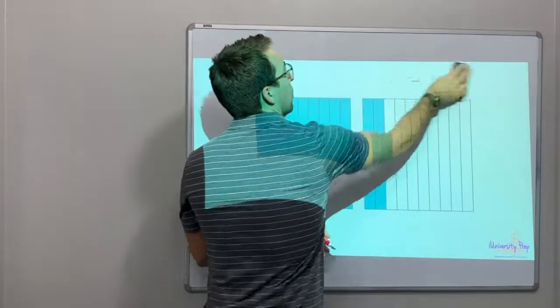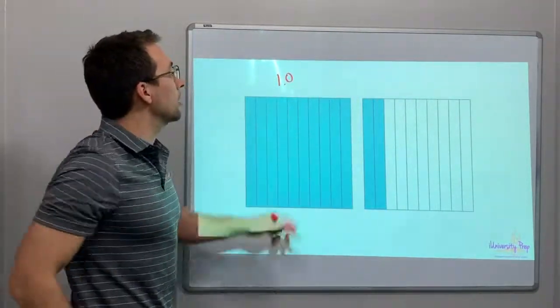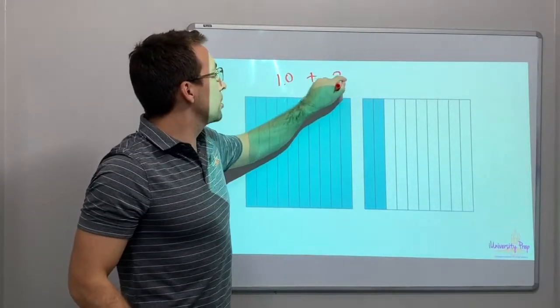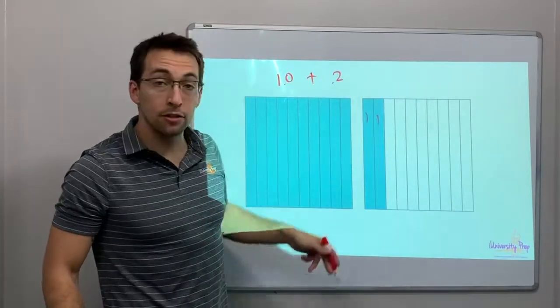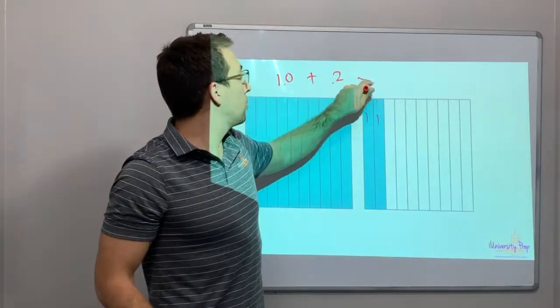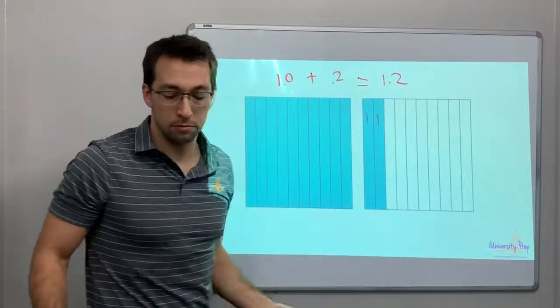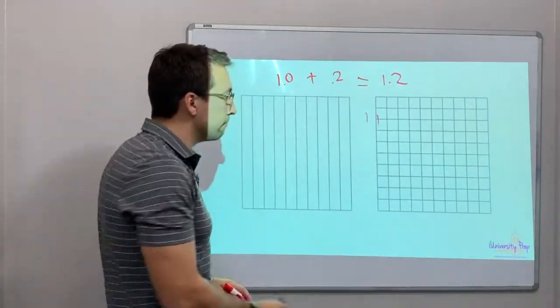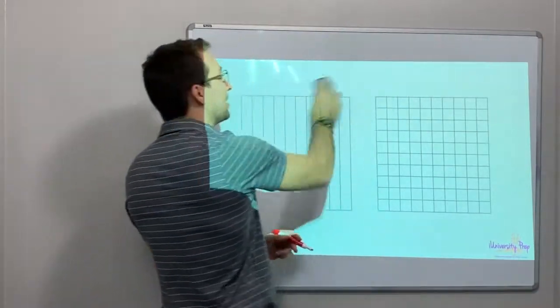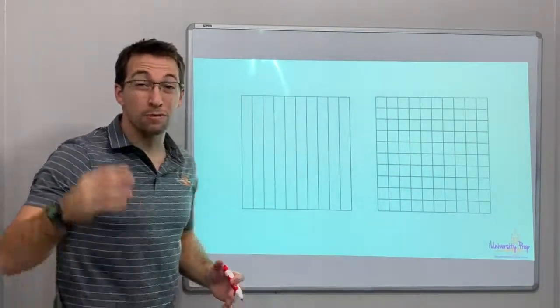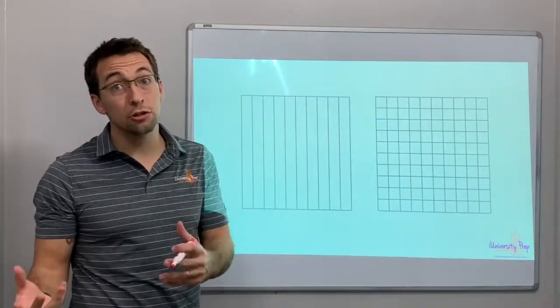And here, again, simple. One whole block plus point two, two tenths, one tenth, two tenths, equals one point two. Perfect. Okay. So, we're looking at the square. Now, let's go from tenths to hundredths.